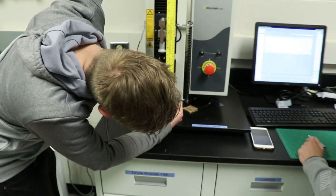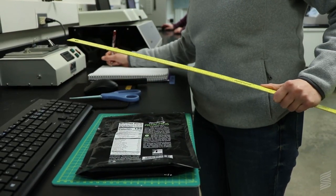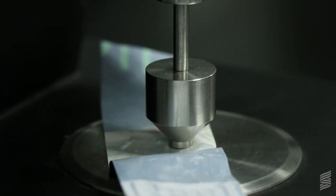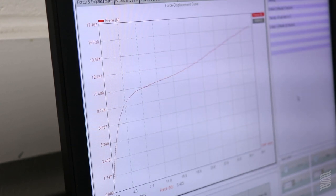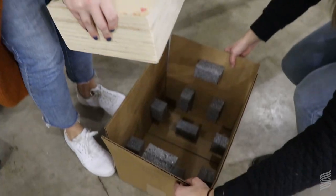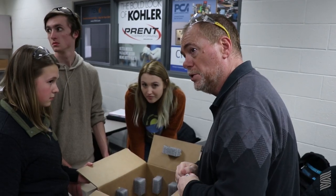The core classes within packaging at UW-Stout are material classes where you explore the properties of plastics, wood, adhesives, and paper. Another core class is our consumer class where you learn how to design packaging based on the material properties from your materials classes.